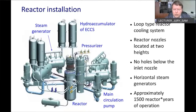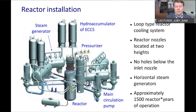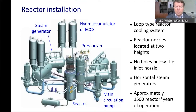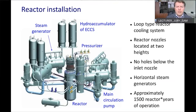You may see the main equipment of the primary circuit. This picture shows how the reactor is allocated, with inlet and outlet pipes. You can see four steam generators, and each loop has a main circulation pump — so there are four circulation pumps in total. You can also see the emergency core cooling system here.